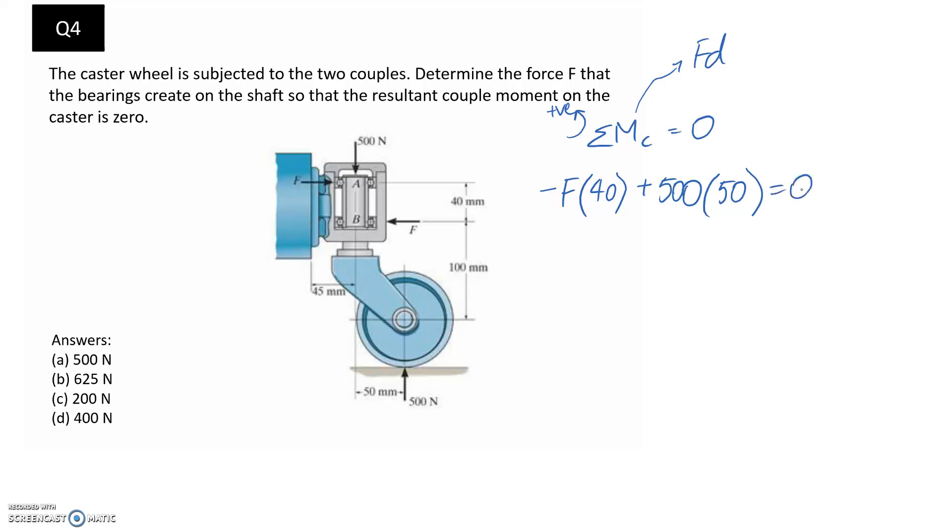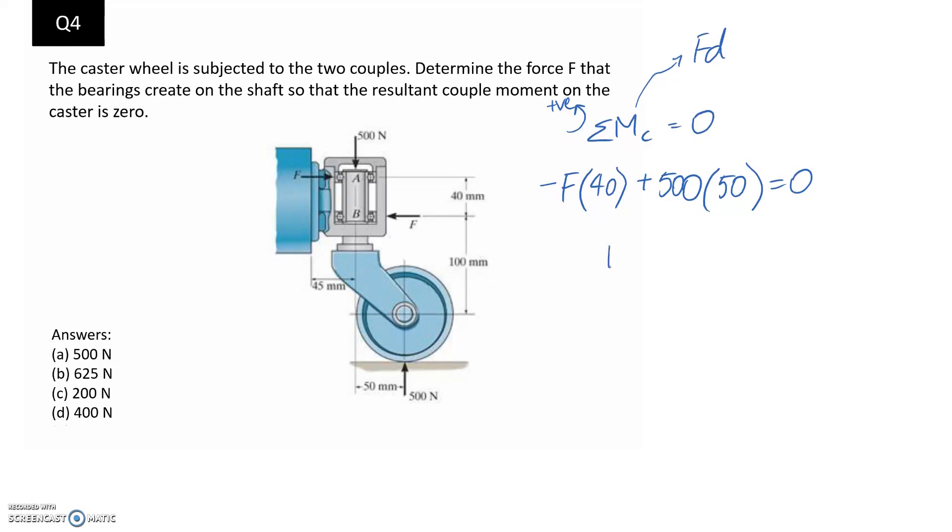So we know that since this is an equilibrium, everything has to sum to zero. So now it's just a case of going through and solving for the force F. So it's going to be 500 times 50 divided by 40, and this works out to be 625 newtons.